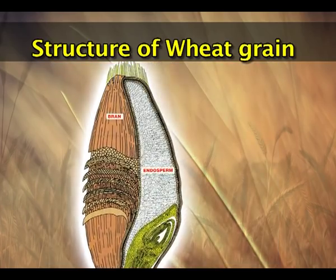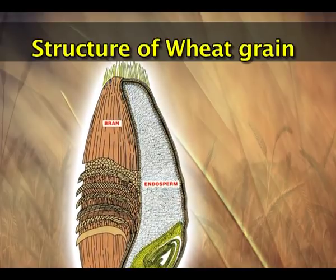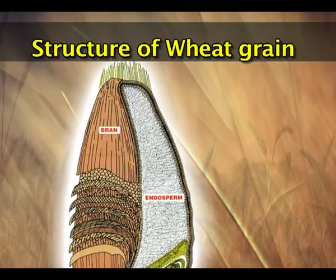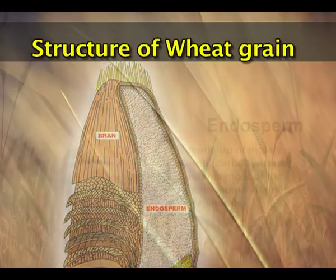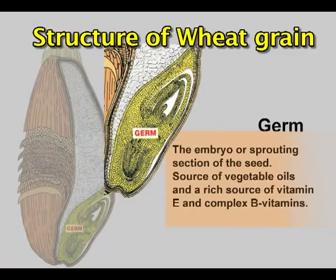Inside the aleurone layer is the endosperm. The starchy endosperm is the one which actually gives the bulk of the flour. The endosperm consists of spherical cells present as spherical granules in which protein is embedded in a matrix. The endosperm constitutes 70 to 80% of the grain weight, and when the grain is converted into flour, the flour mostly comes from the endosperm — that is why it is known as the starchy endosperm. In one corner of the grain is the embryo or germ.